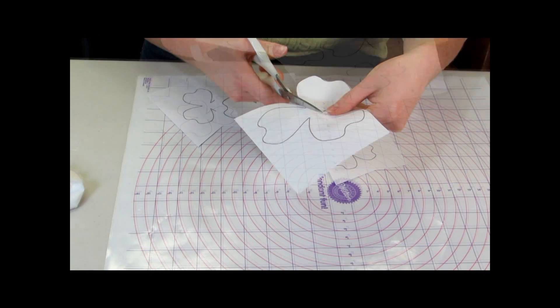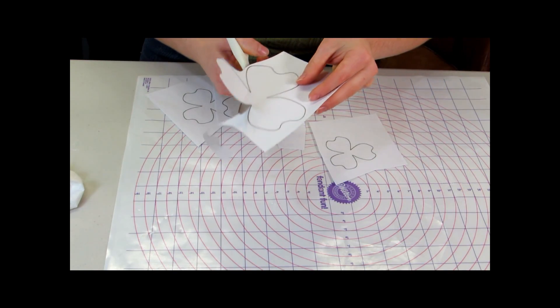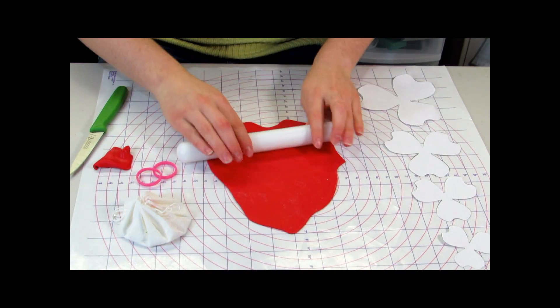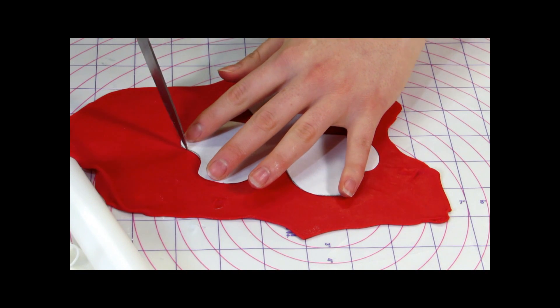So the first thing you need to do is cut out your template. I'll be putting the templates in the description below. There are five sizes that you're going to be needing and you're going to need two of each size.